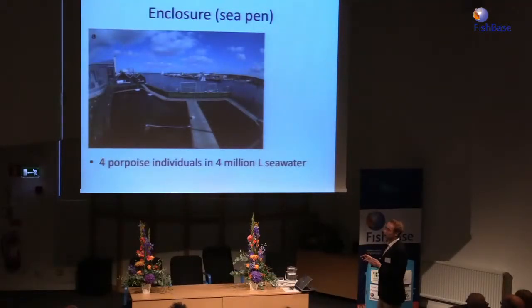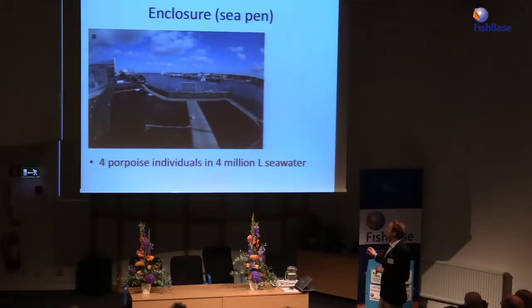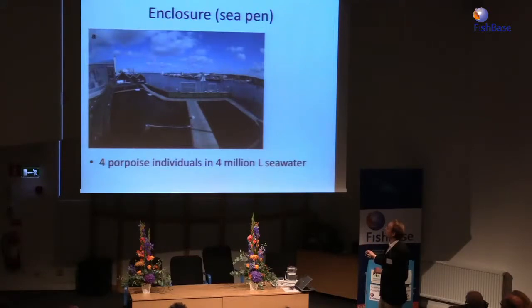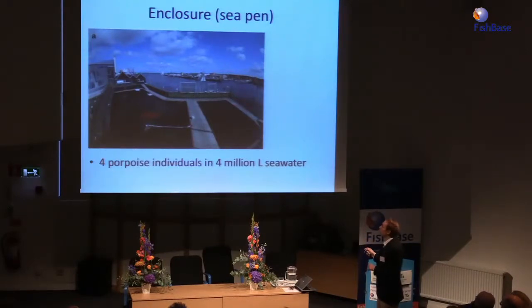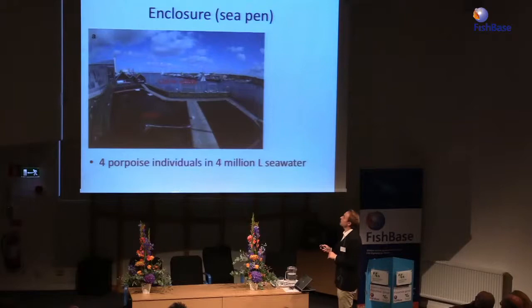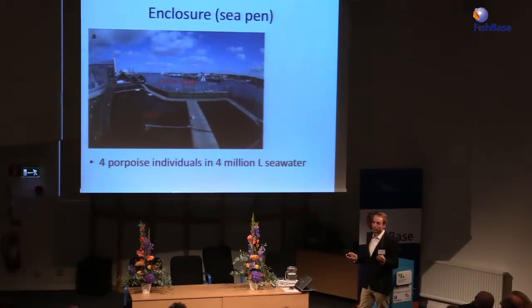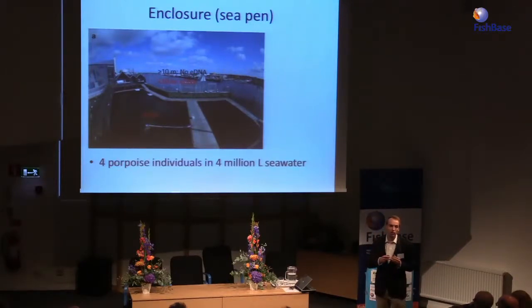Another part of the study looked at how far DNA distributes. There was a sea enclosure of four million liters of seawater with a whole family of porpoises living enclosed and connected to the sea. Samples were taken within the enclosure and outside at varying distances. There was a DNA signal within the enclosure and up to 10 meters outside of it, but above 10 meters there was no DNA detection. This again gives an indication of how fast DNA degrades and how far it actually moves away from the source.